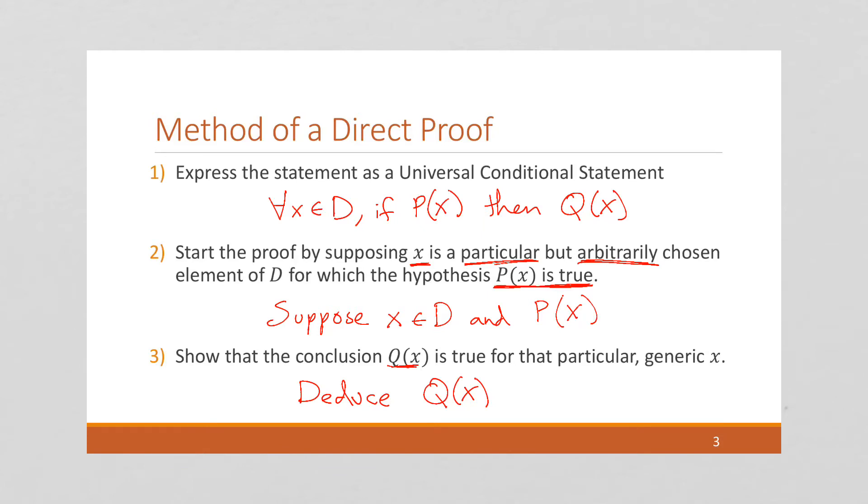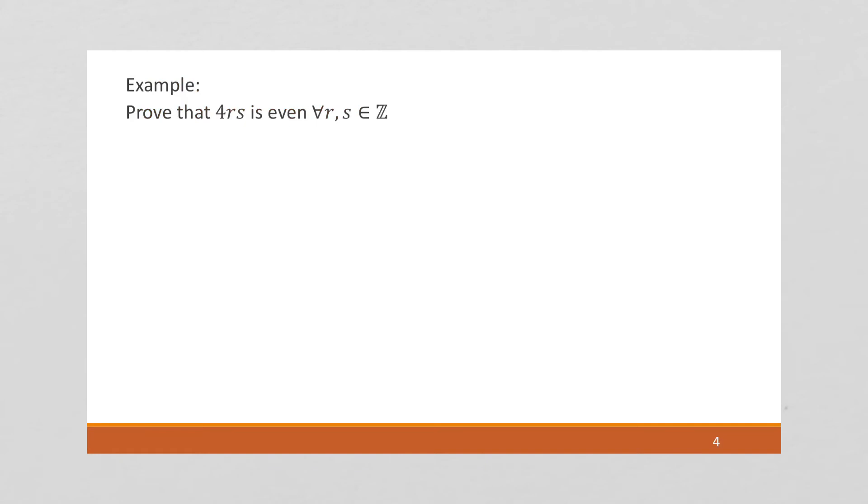Let's take a look. We're going to start by proving that 4rs is even for all integers r and s. That's how you read this line. We're going to prove that 4rs is even for all r and s that are integers.